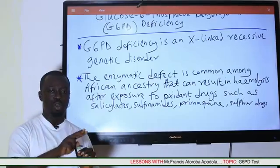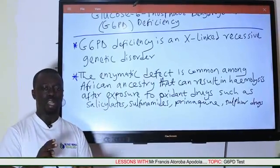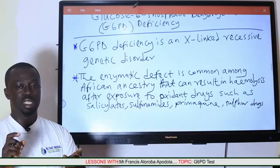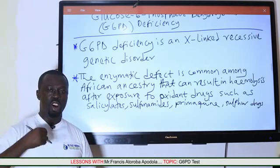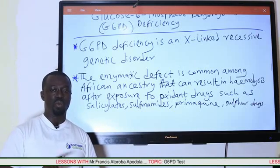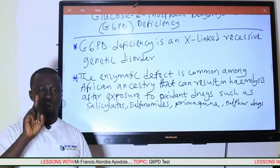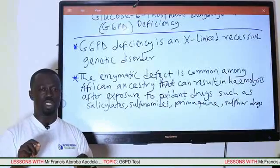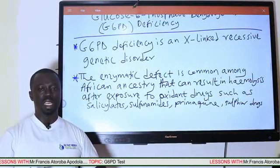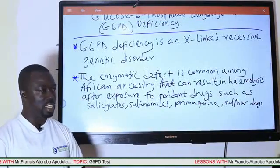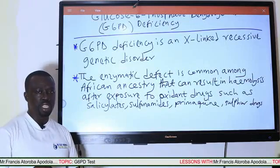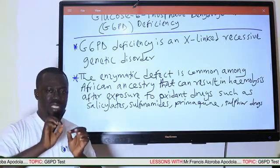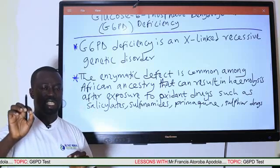When both chromosomes' genes are abnormal, the individual is said to have the G6PD disease. On the other hand, when only one of the copies of the genes on both chromosomes is abnormal, then the individual is said to be a carrier. That is what it simply means to be a recessive genetic disorder.